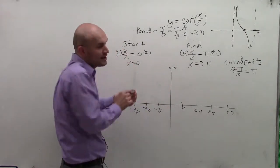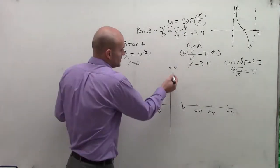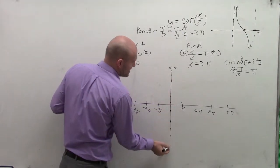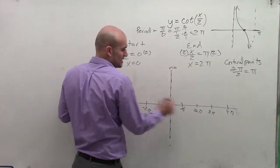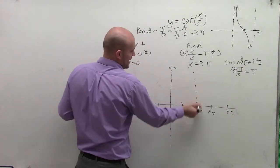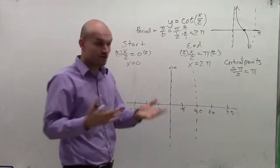Now we haven't changed anything. Our start is still going to be our asymptote. So we're going to have a vertical asymptote at 0. And our end, we're also going to have a vertical asymptote, which is going to be at 2 pi.